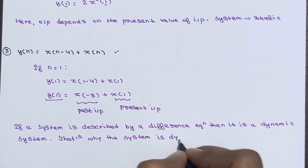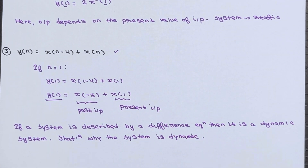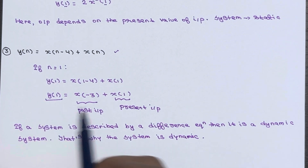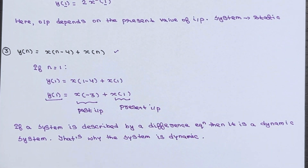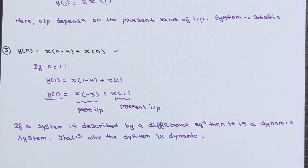Just remember the simple rule: place n=1 and see whether the output depends on a past, present, or future input. If it depends on future values of input, past values of input, or past values of output, it is a dynamic system. If it depends only on the present value of input, it is a static system. Thanks for watching — ask any doubts in the comments and don't forget to subscribe.